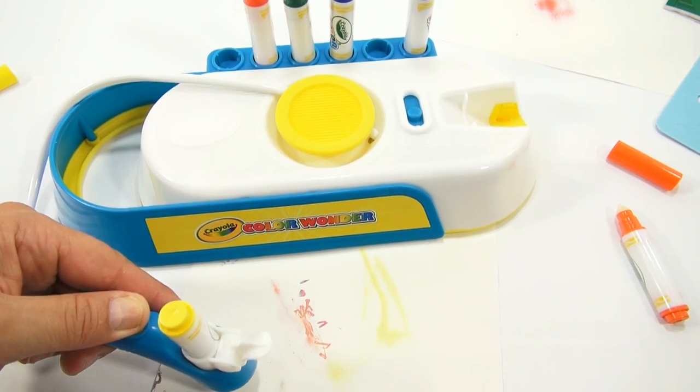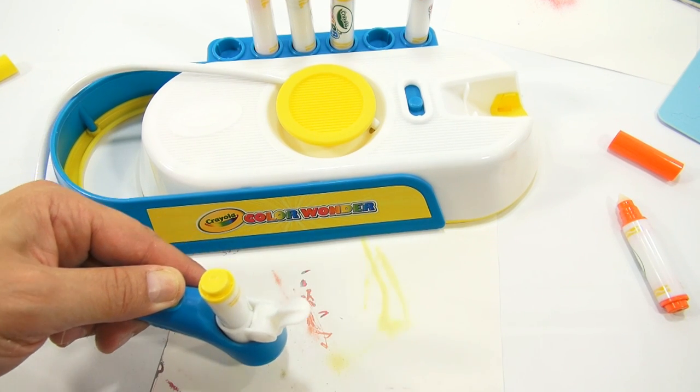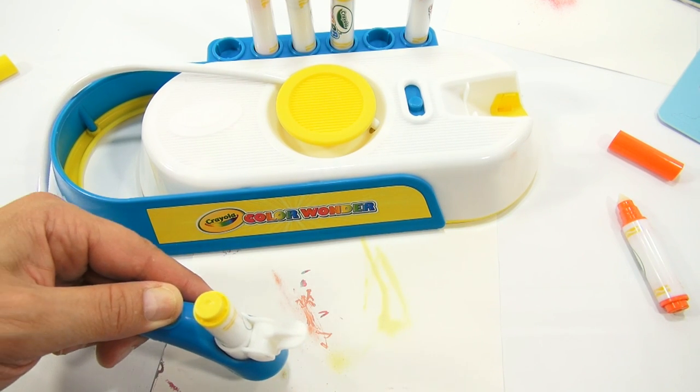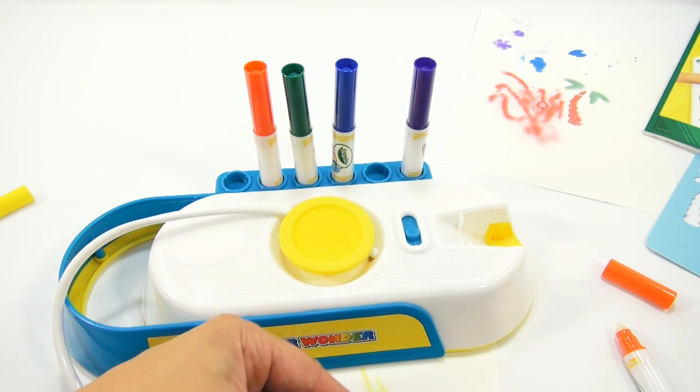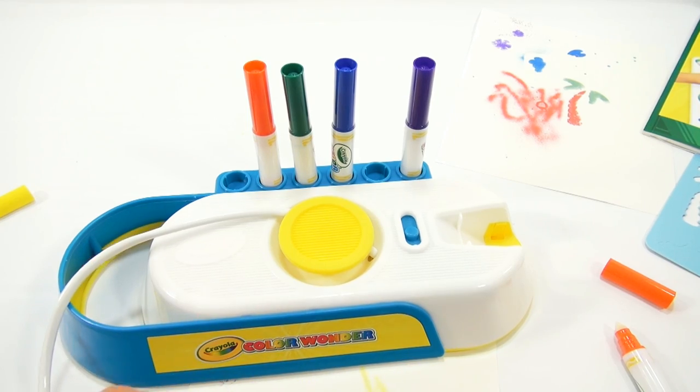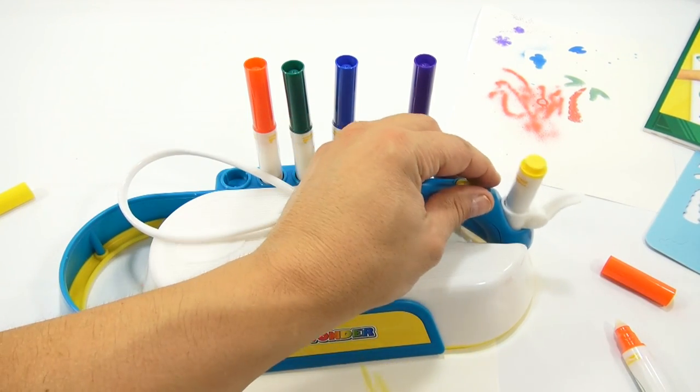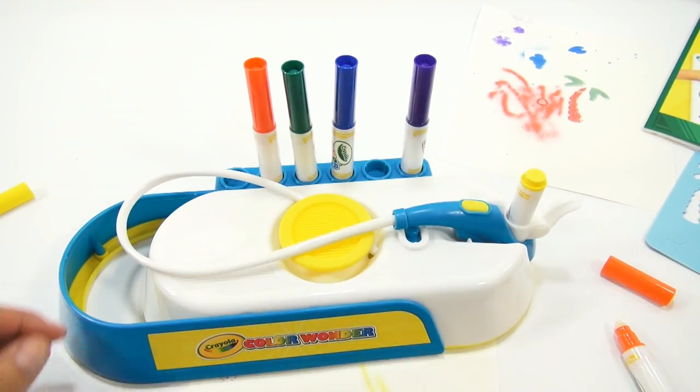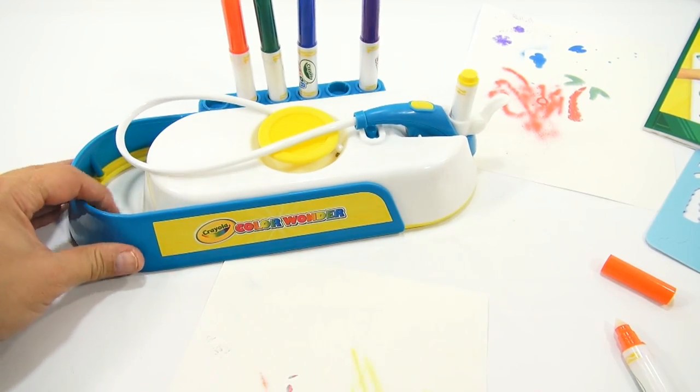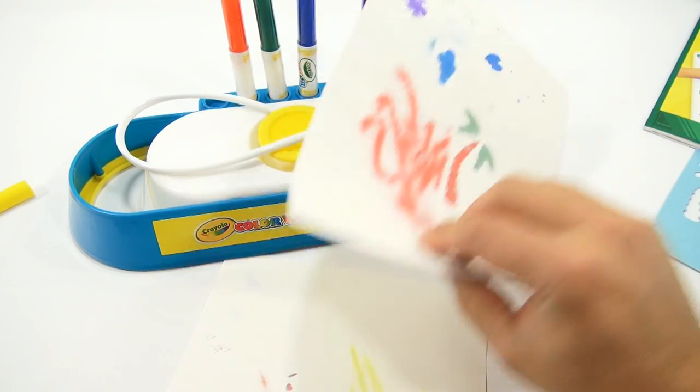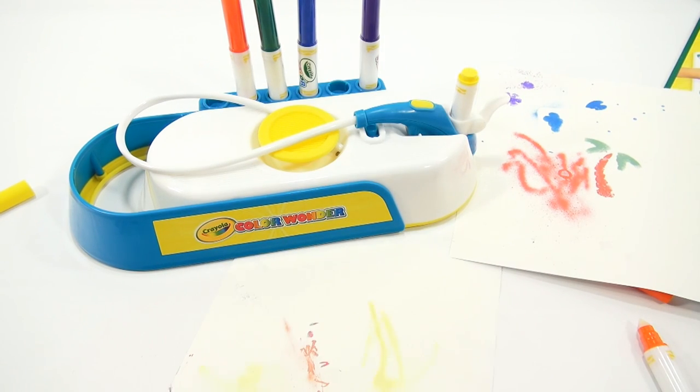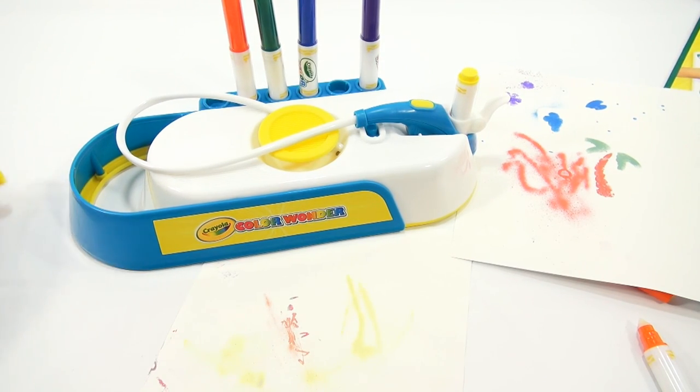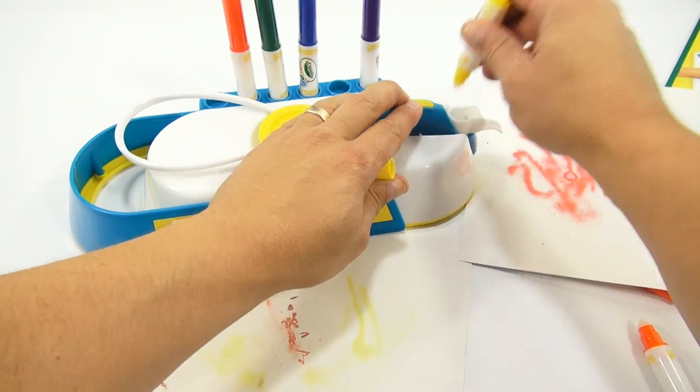That is the Crayola Color Wonder Airbrush. Remember, this is for ages 3 plus. So I think for that age level, it'll be a lot of fun. So if you want to see other Crayola products, look in the description for a playlist. As always, you can search our channel. So there you go. I was able to do a couple things for you today. Maybe at one point we'll bring out the other one and compare the two. But for now, I think we're done.